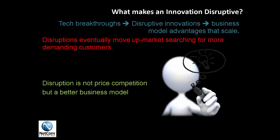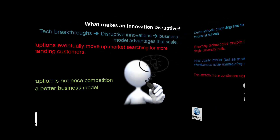So what makes an innovation disruptive? First, we have a technological breakthrough. Then we have a disruptive innovation. And then we have a business model advantage that scales. Even though Kodak invented digital photography — that was the technological breakthrough — they never were able to monetize it. That's why they essentially went bankrupt, unable to compete with something they themselves invented. Disruptions usually move up market searching for more demanding customers. Disruption is not price competition, but a better business model.